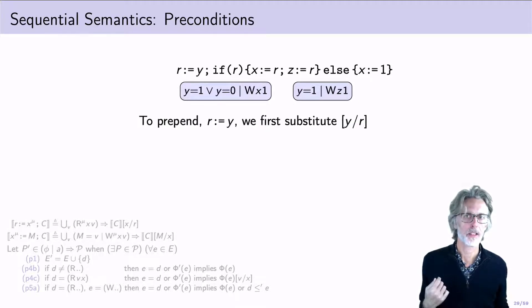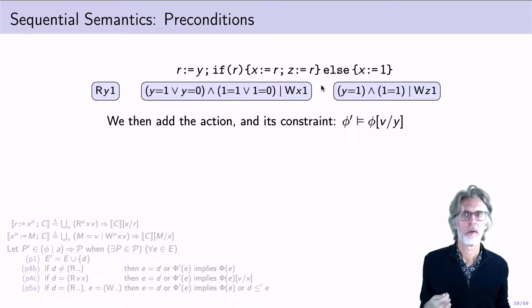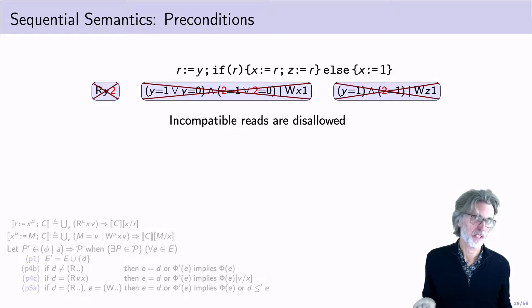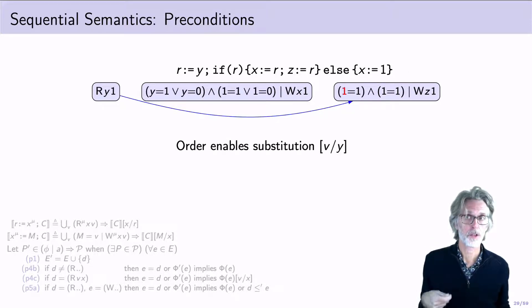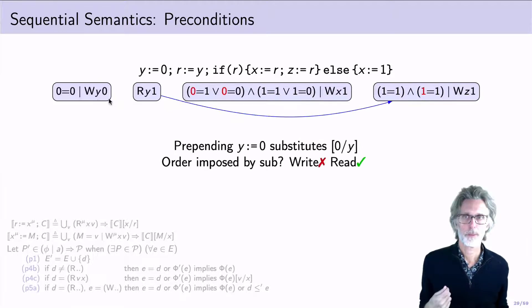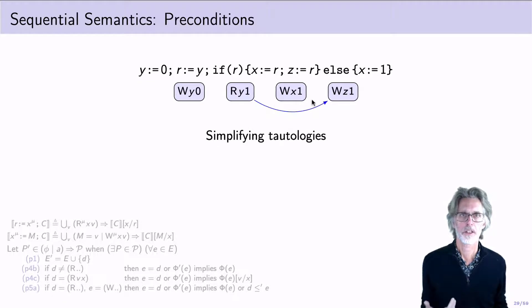Let's start fresh here. If I prepend a read from y, what's going to happen is that I'll substitute y for r throughout these preconditions. When I add in the read action, I need to ensure that those preconditions are consistent with the value that the read action sees. Incompatible reads are going to lead to inconsistent preconditions, which are disallowed. I can introduce order from the read into one of the writes. And in that case, I can actually perform a substitution of the value for the variable. Prepending a write also performs a substitution of the value for the variable. And in this case, no order is required. Simplifying tautologies, we end up with this POM set here. And that pretty much explains the sequential semantics, how we deal with preconditions.